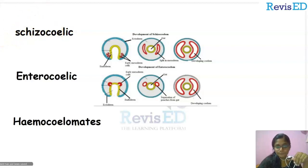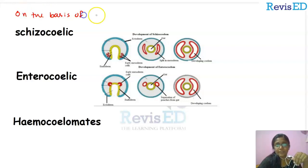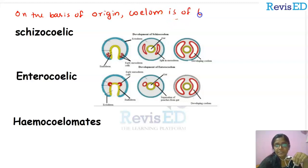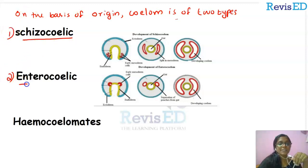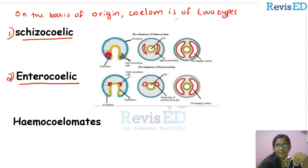Today we are going to discuss something related to coelom based on its origin. On the basis of origin, coelom is of two types: the first one is schizocoelic and the second one is enterocoelic.